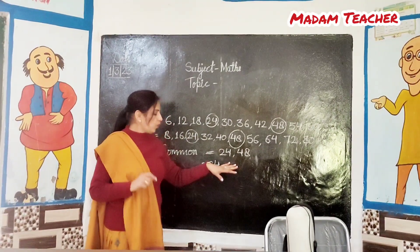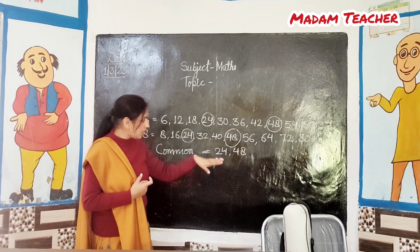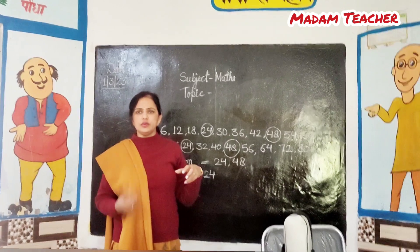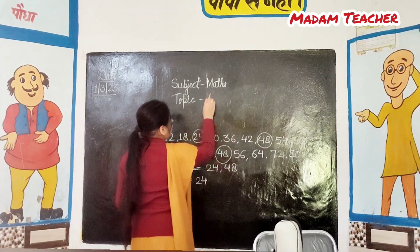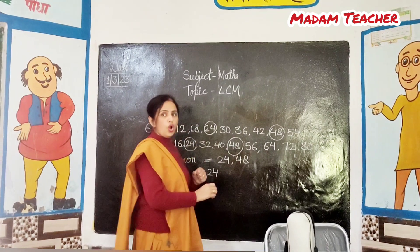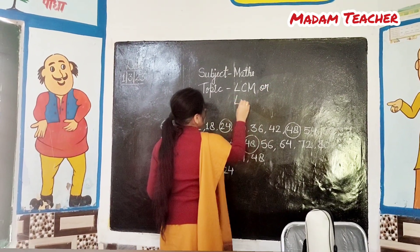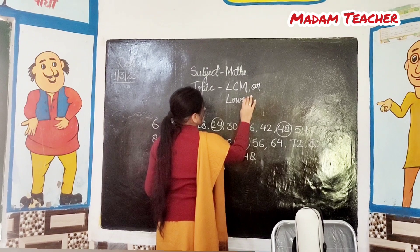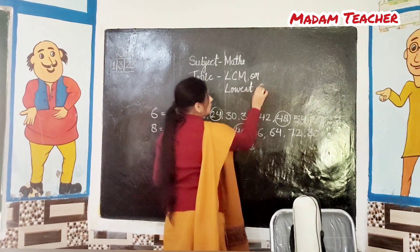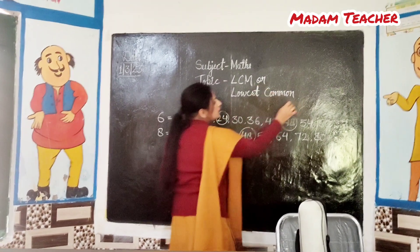See everybody — what do we call the smallest number in both the tables? What do we call the smallest number? Today we will know what is LCM. Lowest — Common — Multiple.